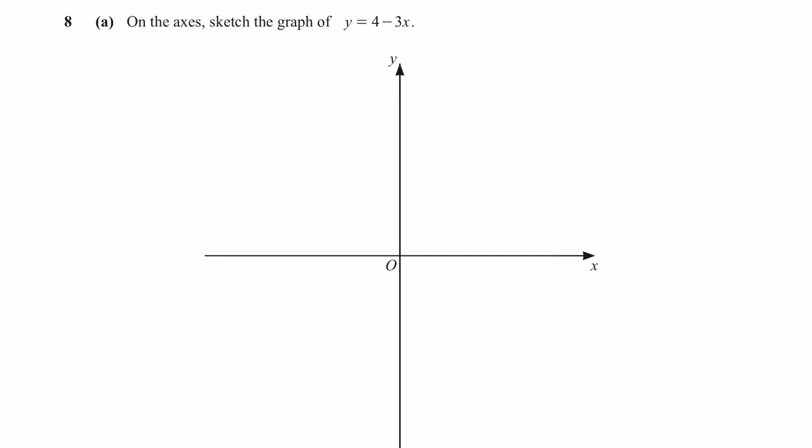Question 8a. On the axis, sketch the graph of y equals 4 minus 3x. First, let's change this to y equals mx plus c. Next, plot a table like this to find the coordinates of x and y. When x equals 0, the value of y is 4.